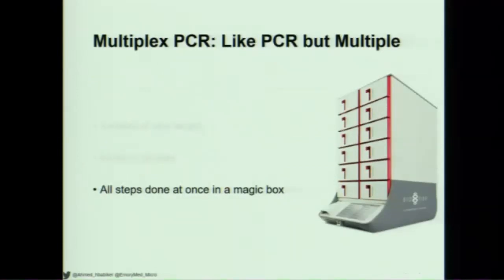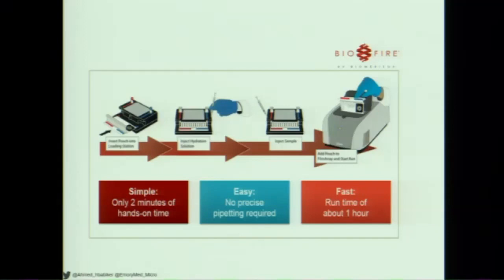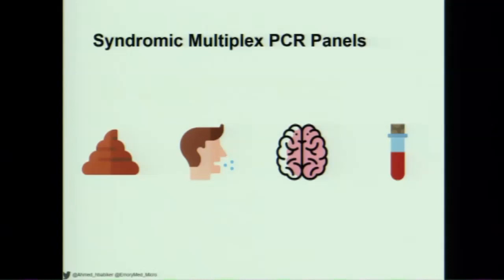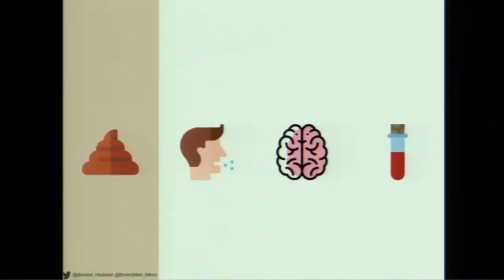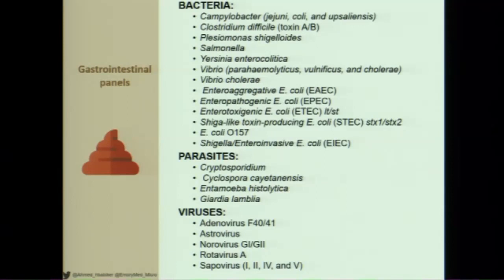The really powerful part of this technology is that people have taken a multi-step process and made it a one-stop shop. With some of these multiplex PCR panels, everything — all the sample preparation — is done in just a few minutes. You take your primary sample, which can be CSF, blood, or sputum, load it into a pouch, add hydration, put it into the machine, and within an hour you can have the results.